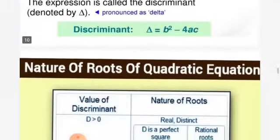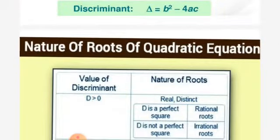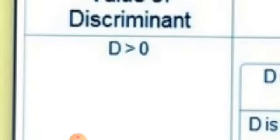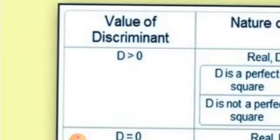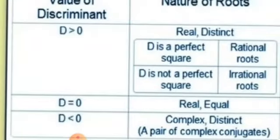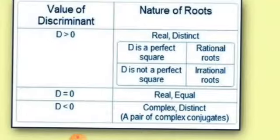The second topic is the nature of the roots. We have three cases based on the discriminant. First case: if the discriminant is greater than zero, the roots are real and distinct. Second case: if the discriminant is less than zero, the roots are not real.